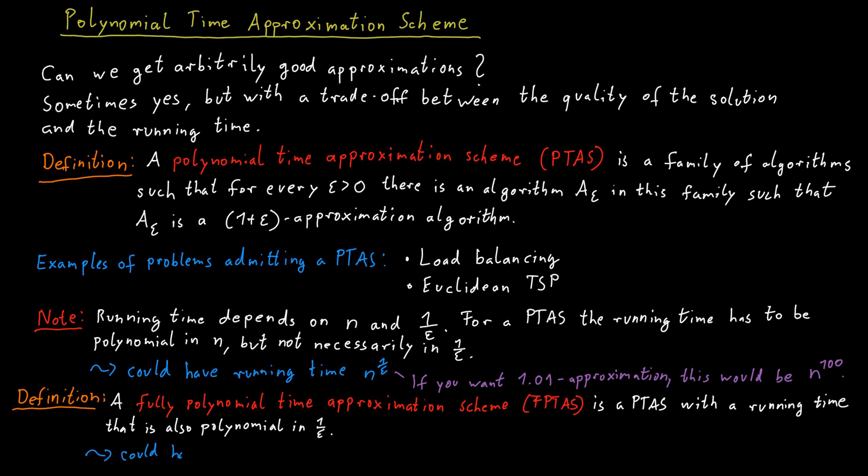An example of a running time for an FPTAS would be something of the form n cubed divided by epsilon squared. This is just an example. But you can see that in this case, if we would require a 1% approximation, we would again set epsilon to 0.01. And if you plug that in, that function becomes 10,000 times n cubed.